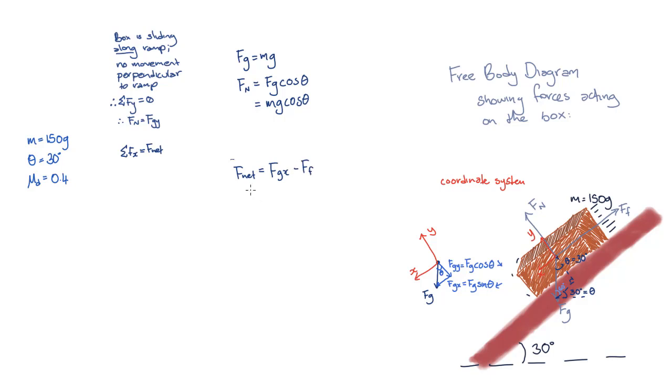Now, the equation for frictional force is the coefficient of friction times the normal force. So we can use the relationship we worked out from the y direction to write the frictional force as mu times mg cos theta. This means we can write the net force as mg sin theta minus mu mg cos theta.